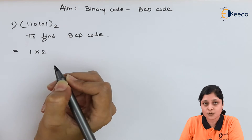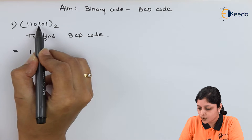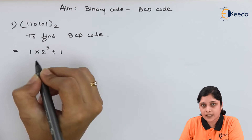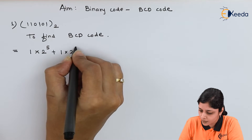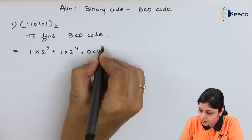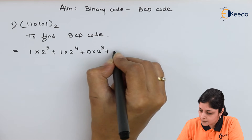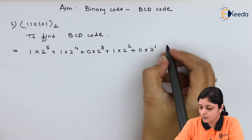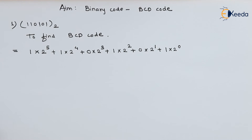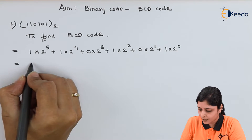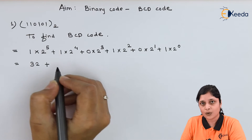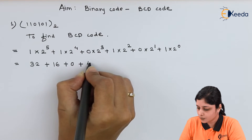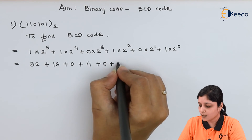Now we will write the expression: 1 × 2⁵ — calculate the number of bits: one, two, three, four, five, six — six bits are there, so the power will be 5. Then decrease the power by one: 1 × 2⁴ + 0 × 2³ + 1 × 2² + 0 × 2¹ + 1 × 2⁰. Write down the equivalents: 2⁵ = 32, plus 2⁴ = 16, plus anything multiplied by 0 is 0, plus 4, plus 0.